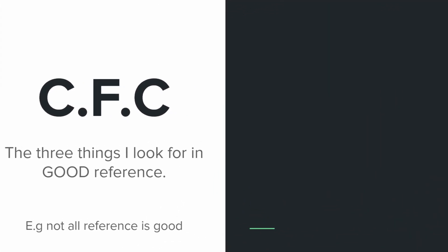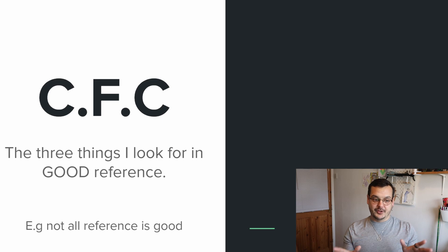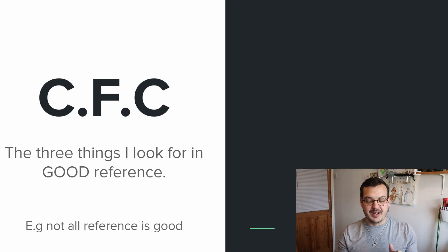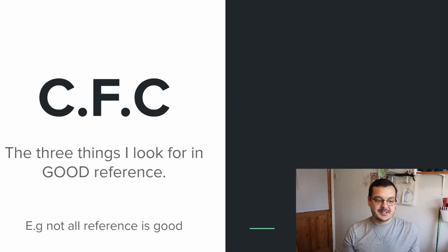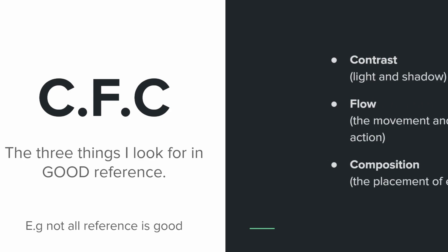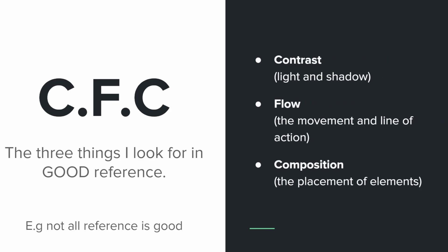So CFC — these are the three things I look for in a good reference. I'm specifying good reference because there is such a thing as bad reference. CFC — it's not chlorofluorocarbons, we're not in chemistry today. These are my three go-to things: Contrast — the light and shadow in the piece; Flow — the movement, line of action, that kind of thing; and Composition — the placement of the individual elements within the piece.